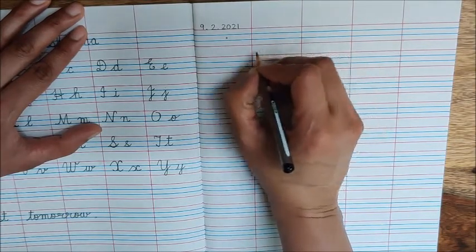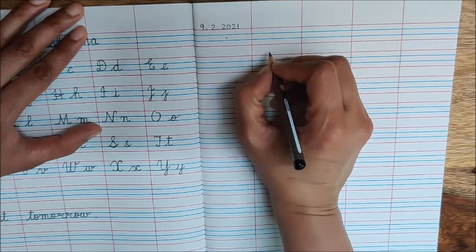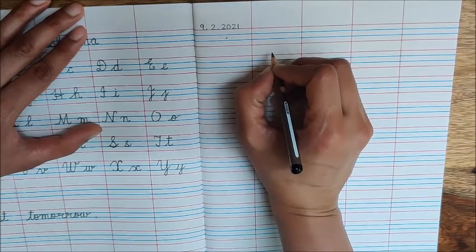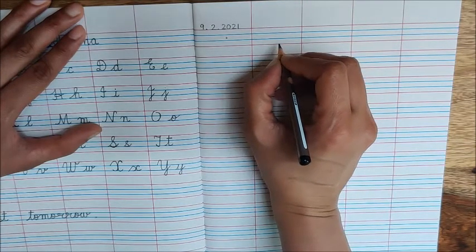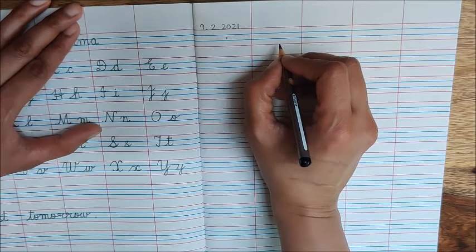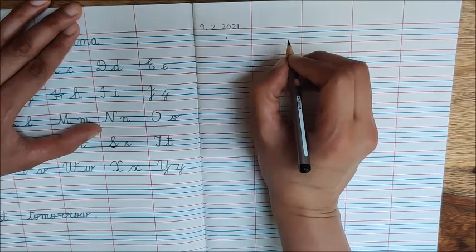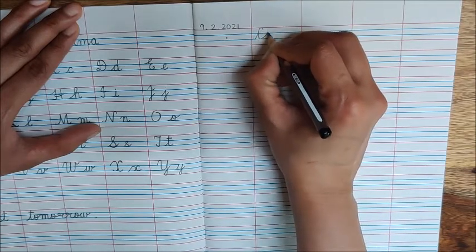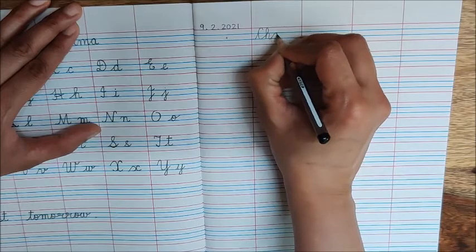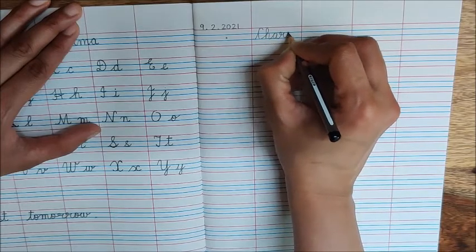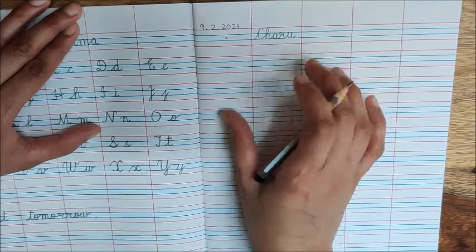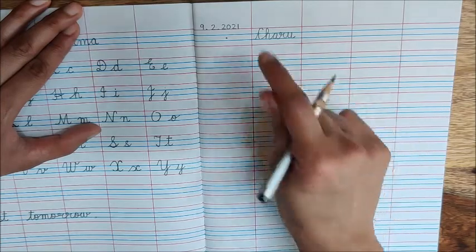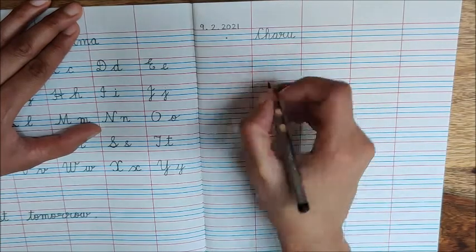In this box write your first name. We will not write our full name today, we will write only our first name. My full name is Charu Sharma, but my first name is Charu, so I will write Charu. You write your first name. After writing your name, we have to write numbers.